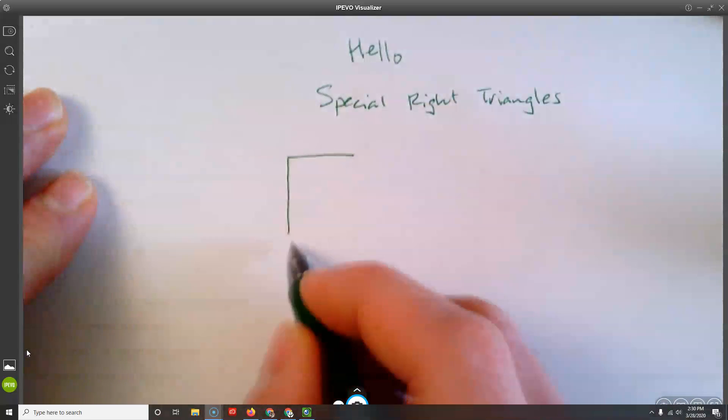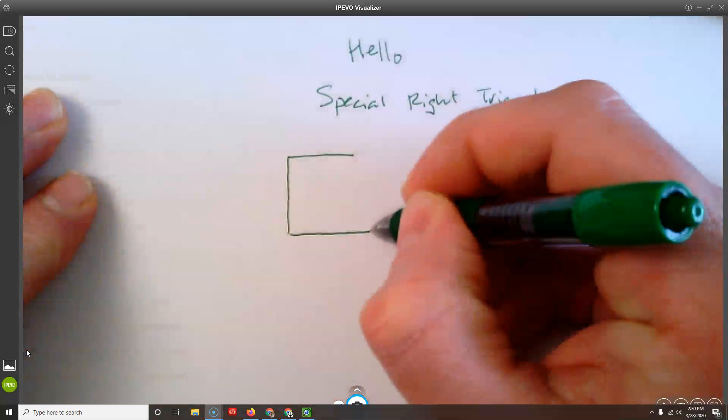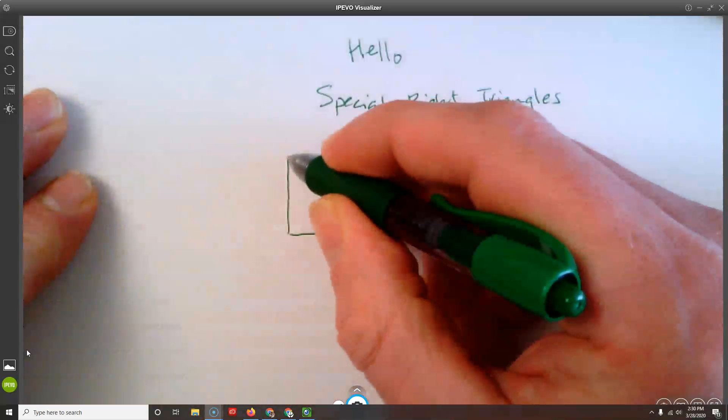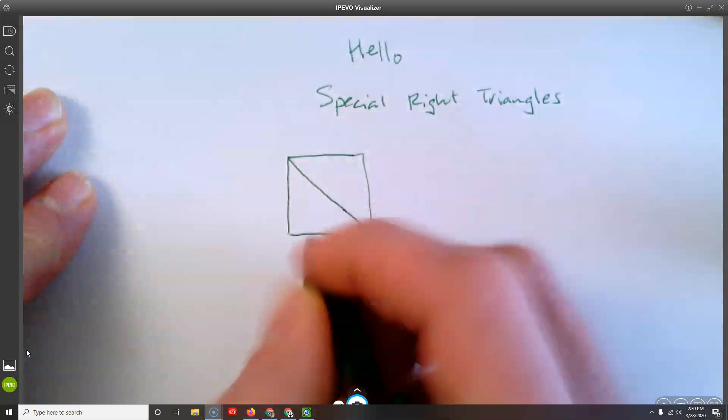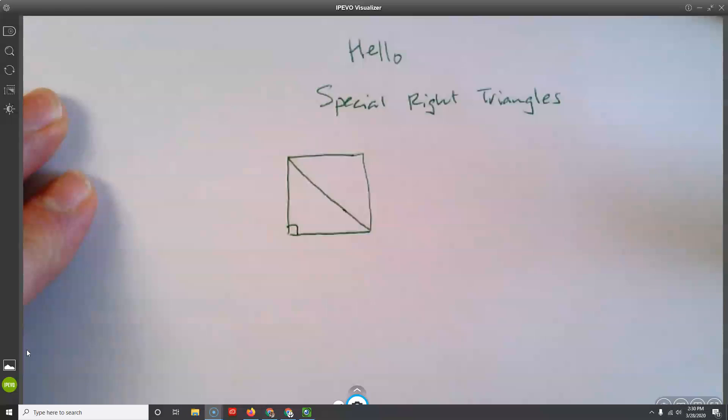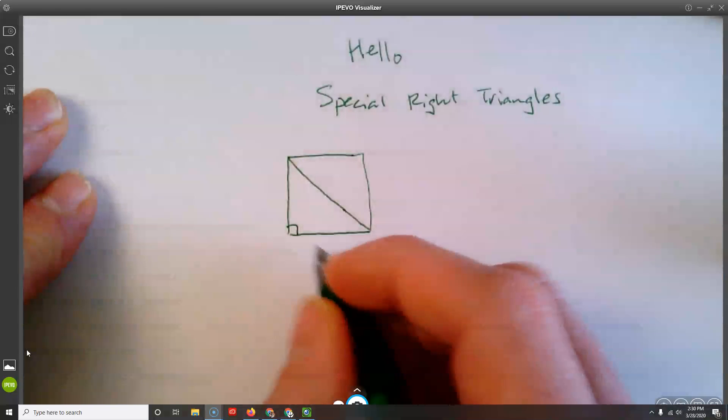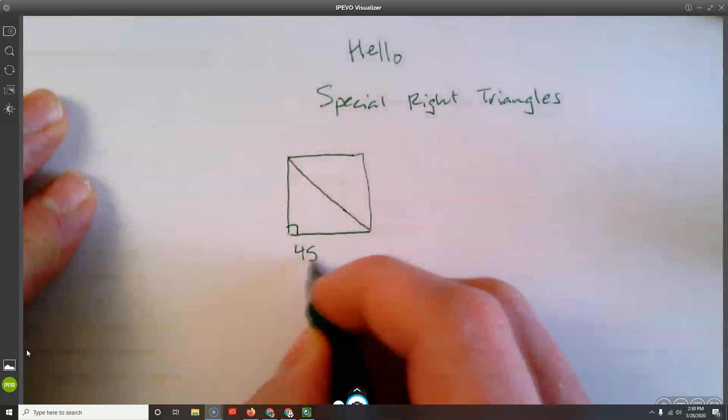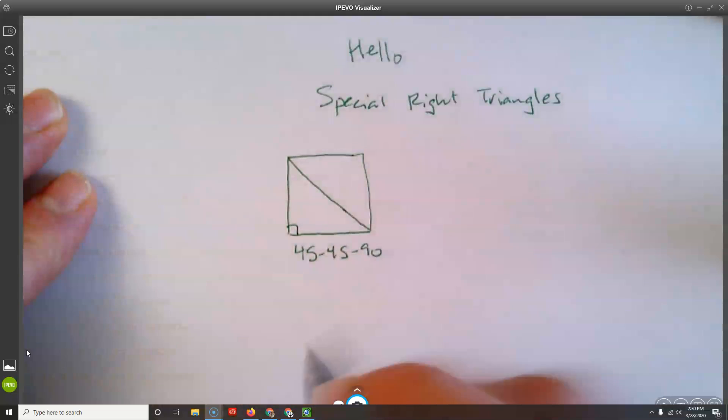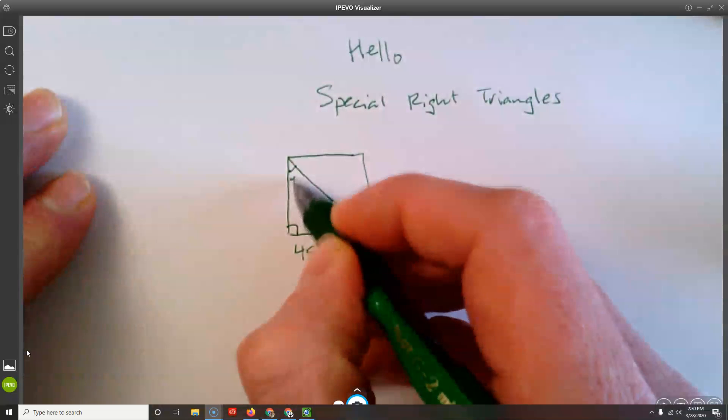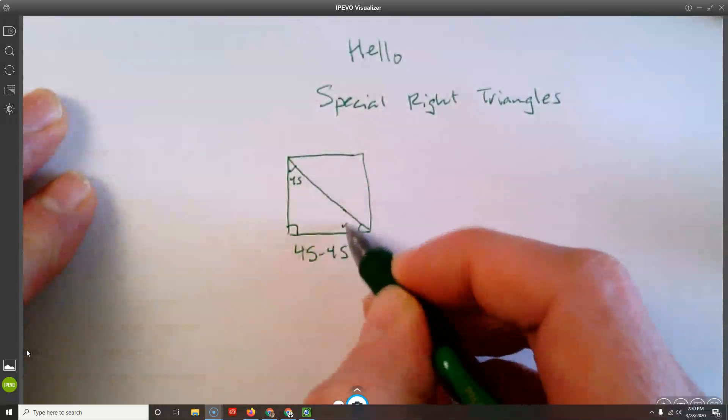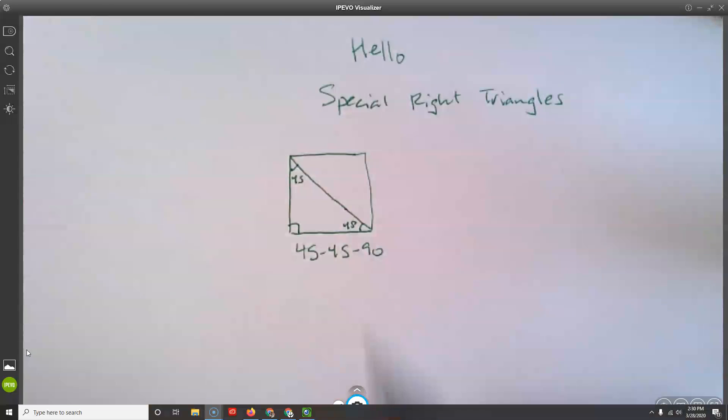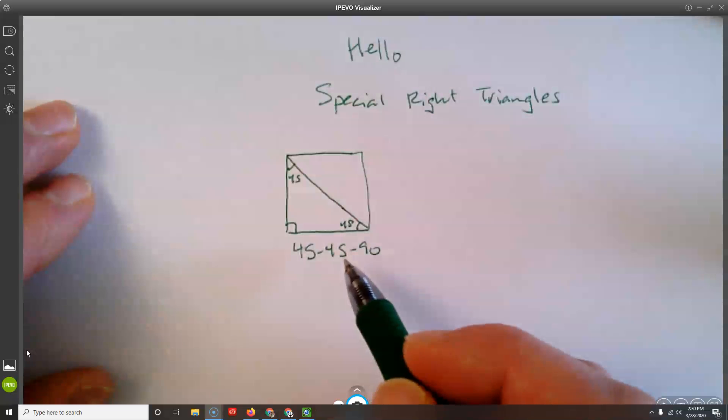The first, if I take a square and I cut that square in half, I get a right triangle and this one is called the 45-45-90 right triangle because it has 45 degree angles. Because the square originally had all 90 degree angles and then I cut two of them in half.